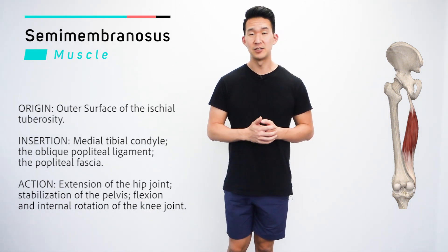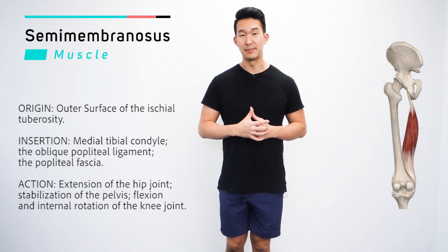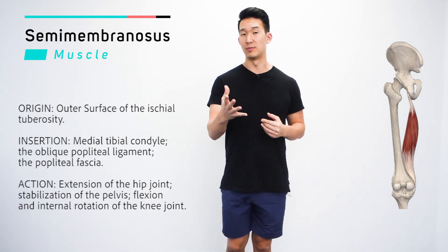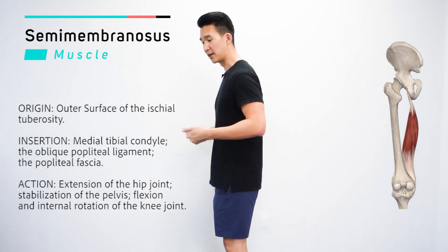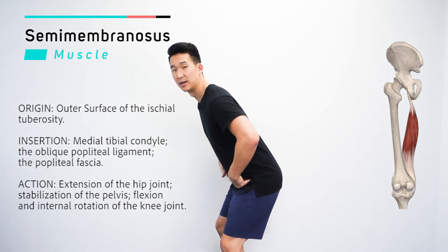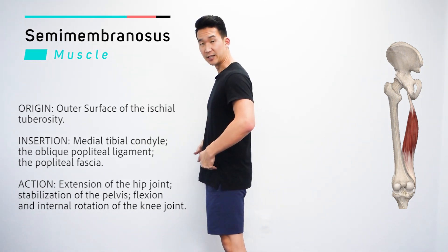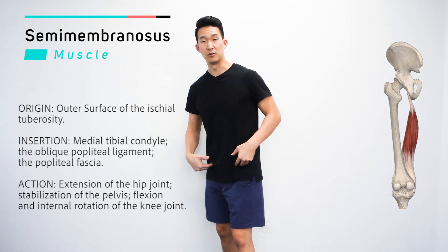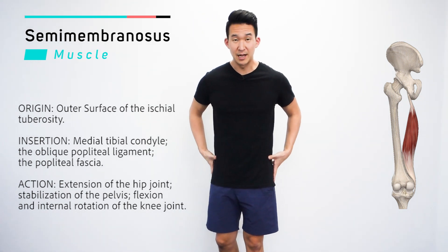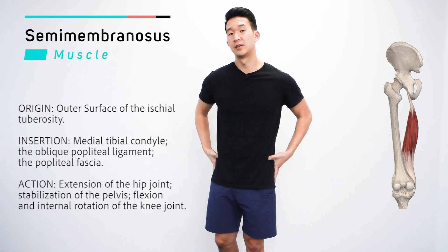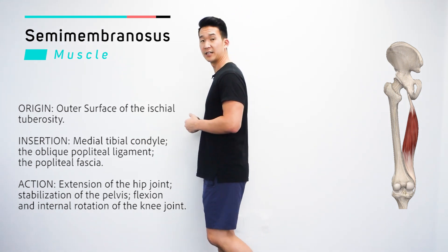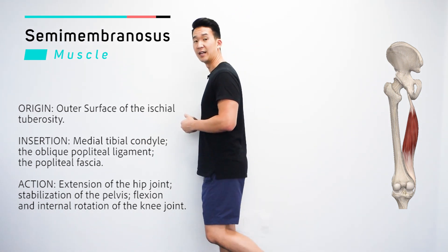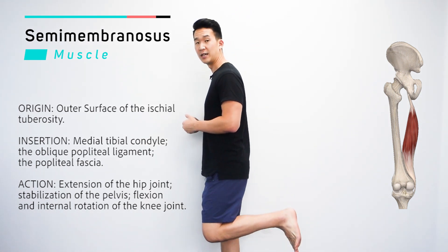The actions for the semimembranosis — remember, hamstring group — we're looking at hip extension. It's also going to stabilize the pelvis, and knee flexion and internal rotation.